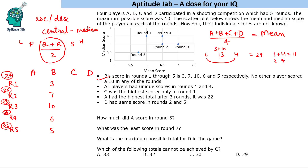This contradiction proves B must have the lowest score in Round 1. So the lowest is 3, and since lowest + highest = 11, the highest is 8. No other player can score 10 in any round, and the constraint is satisfied. So in Round 1, the highest score is 8 and the lowest is 3 (B).